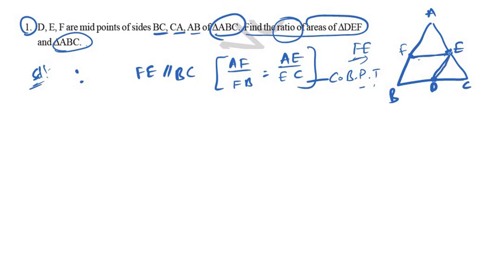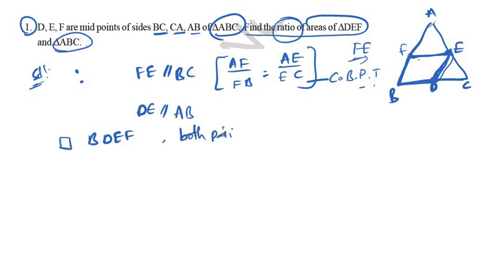Now D is also parallel — we can write D parallel to AB. From the Basic Proportionality Theorem, we get the same ratios. From this, we can say that BDEF forms a parallelogram, since BF is parallel to DE and FE is parallel to BD.